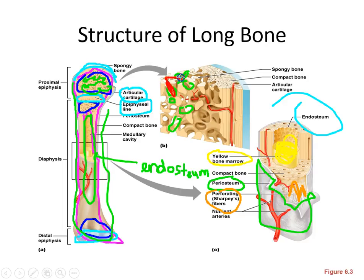Red bone marrow is where hematopoiesis occurs — that's where we make our red blood cells, white blood cells, and platelets. The areas of red bone marrow decrease as you age, and when you're an adult they're only found in the heads of your humerus and femur, the ilium, and the flat bones of your skull.